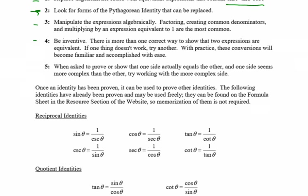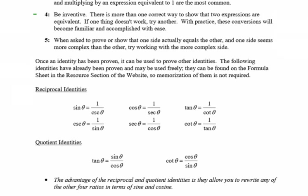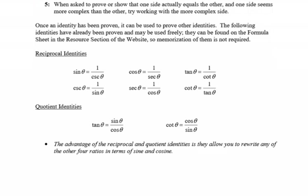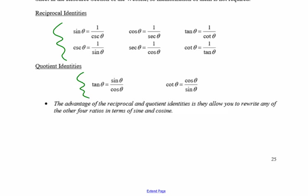Step two: look for forms of the Pythagorean identity that can be replaced — we'll go over what that is. Step three: manipulate the expressions algebraically — factoring, creating common denominators, and multiplying by an expression equivalent to one. Just play with it until you can get it to turn into something you like. You need to be inventive; there's more than one correct way to show that two expressions are equivalent. If one thing doesn't work, try another — there is no set-in-stone way to do this.